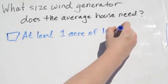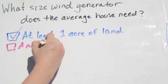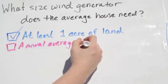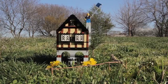First, you need at least an acre of property. Second, do you have enough wind? The Department of Energy says small wind generators start to make sense with an annual average wind speed of about 10 miles per hour.